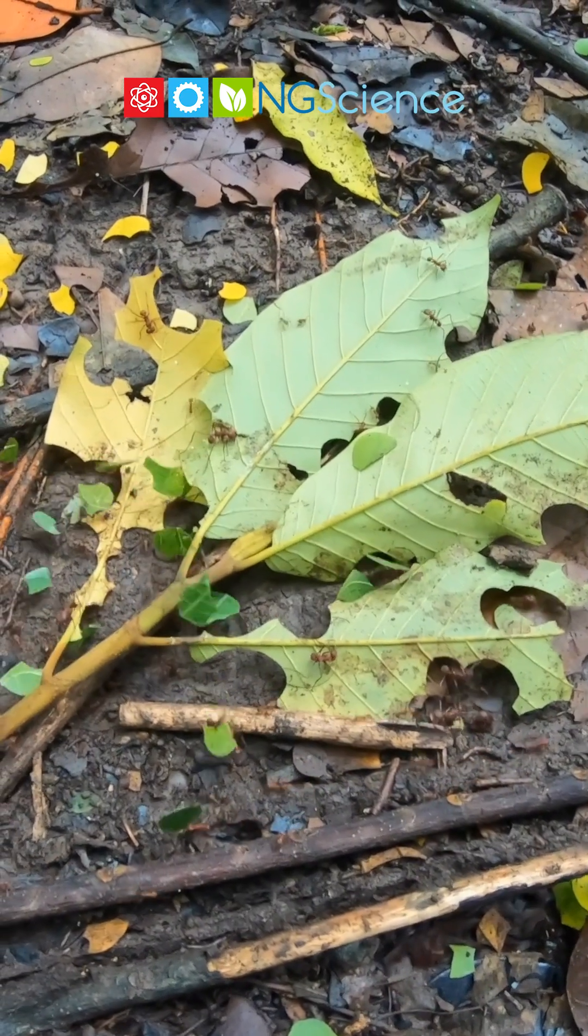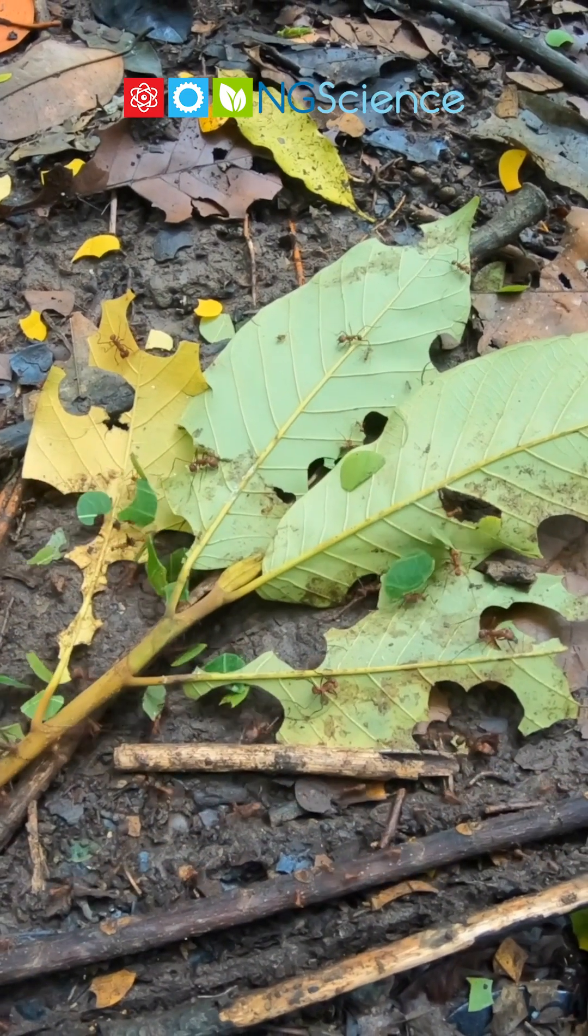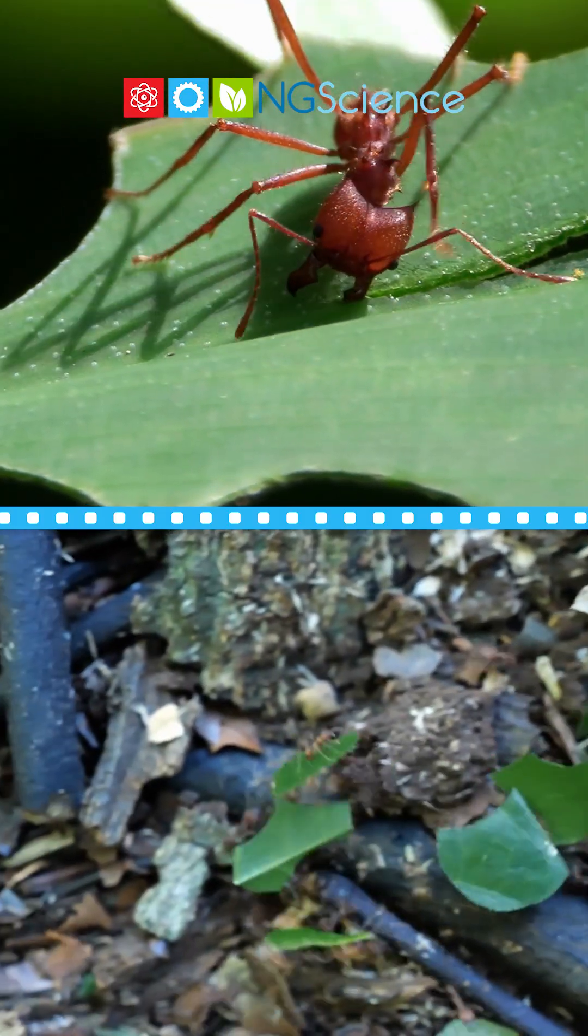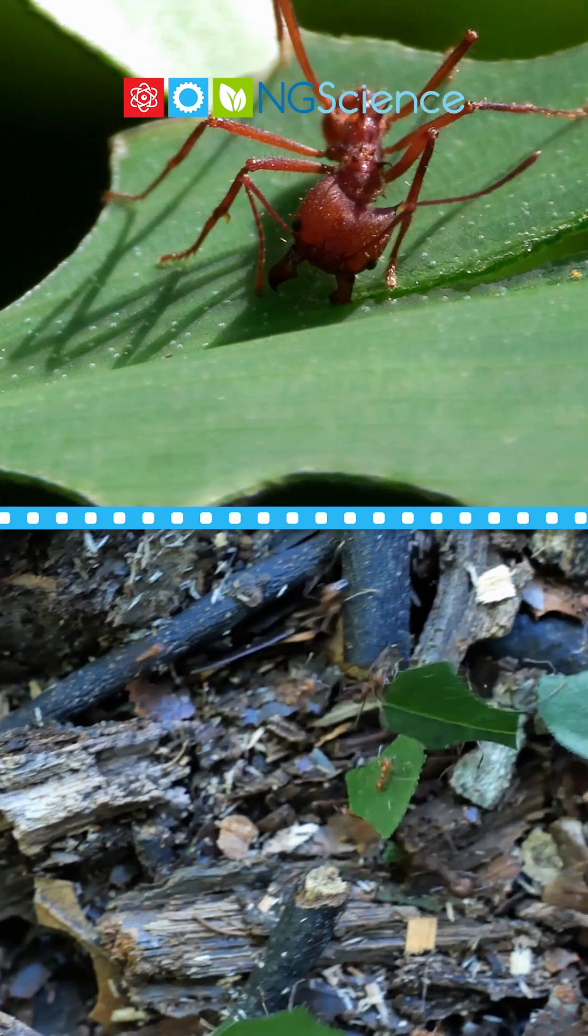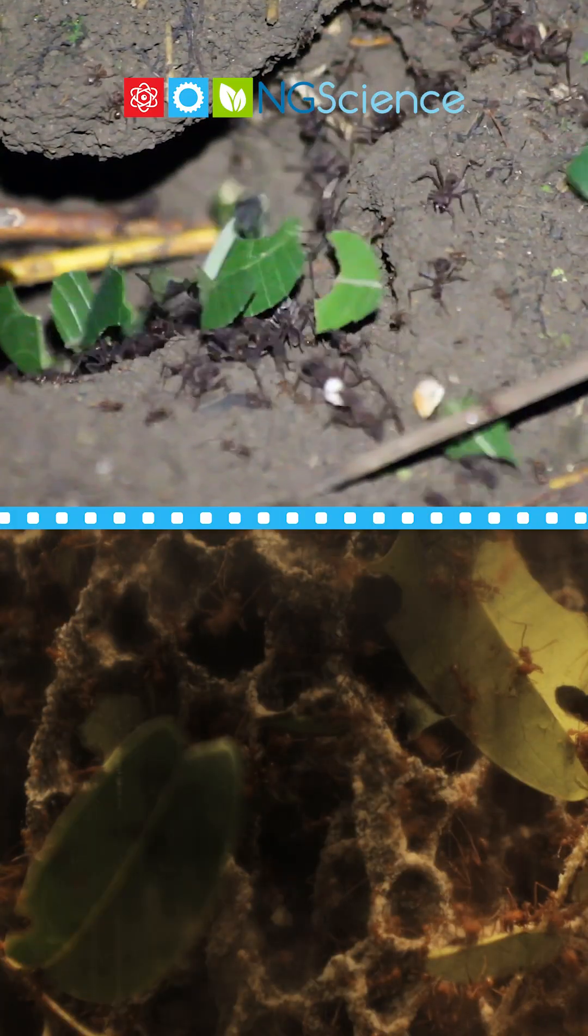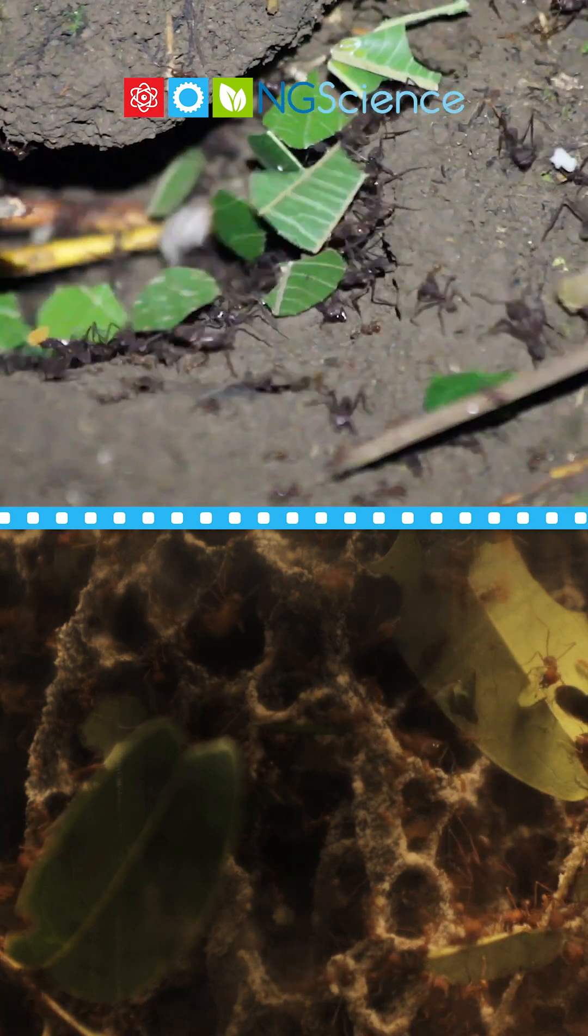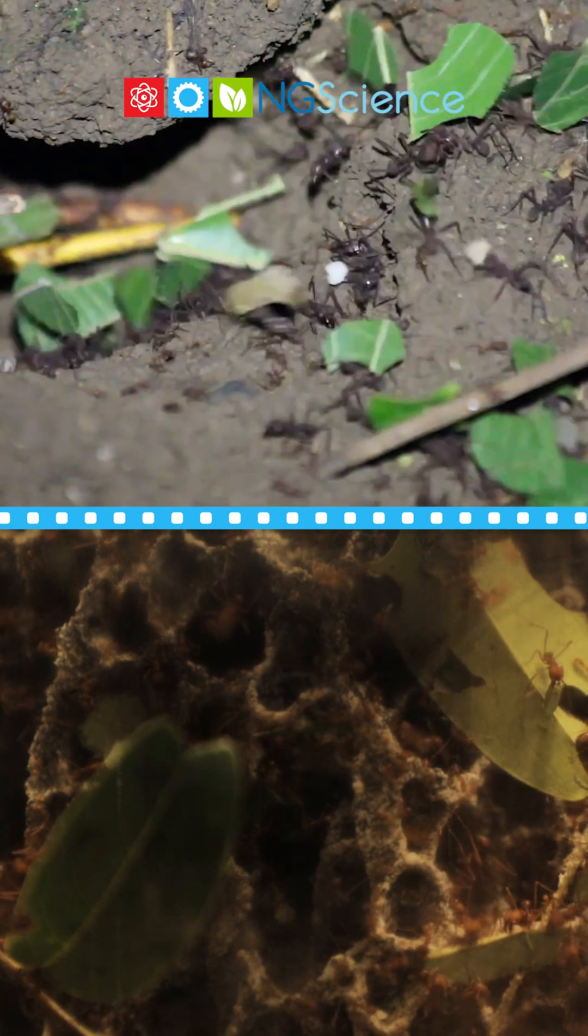Leafcutter ants play a crucial role in maintaining the health and balance of their ecosystems. Their leafcutting activities help in pruning plants, stimulating new growth and maintaining plant diversity. As they decompose these leaves in their nests, they enrich the soil with nutrients, aiding in the overall fertility of the land.